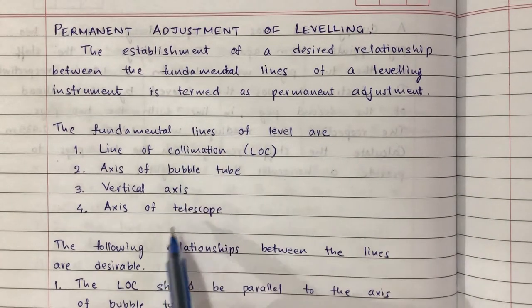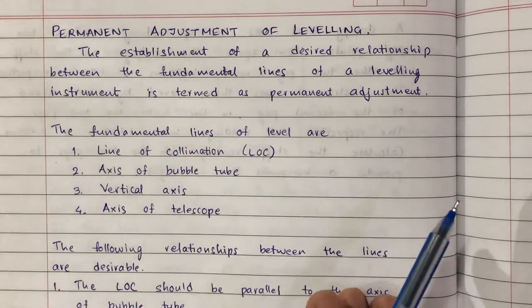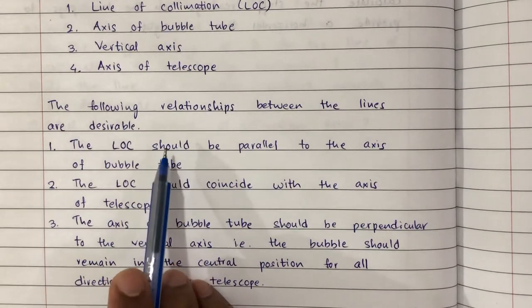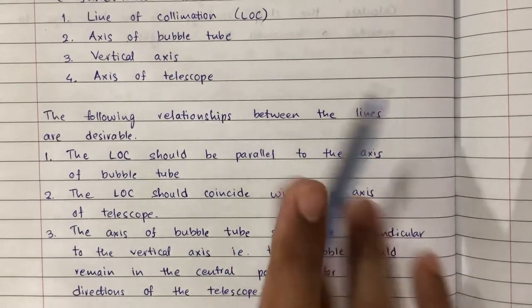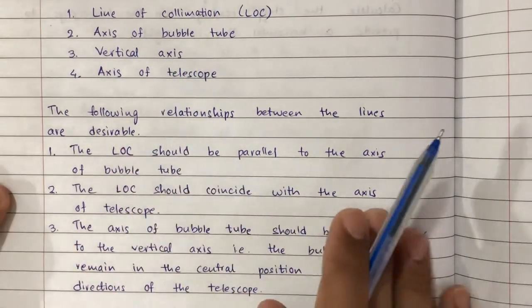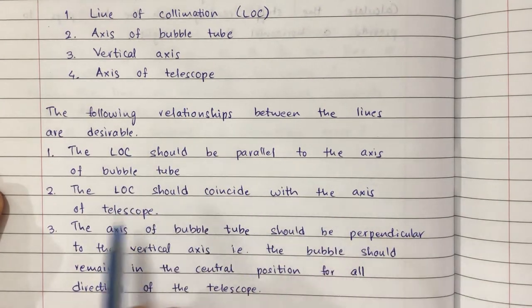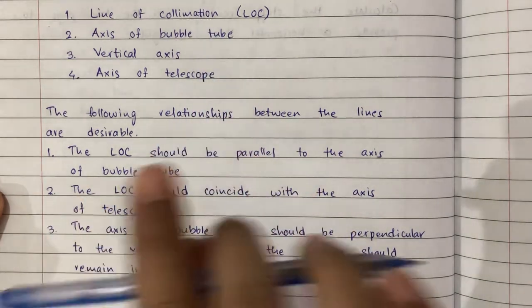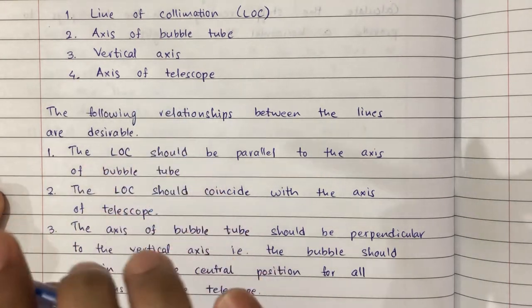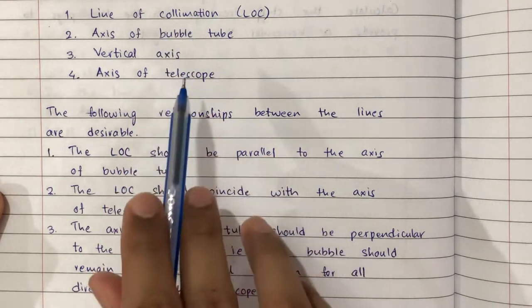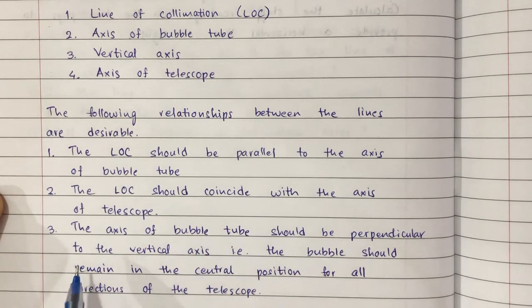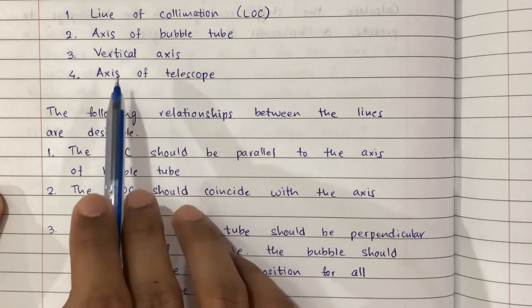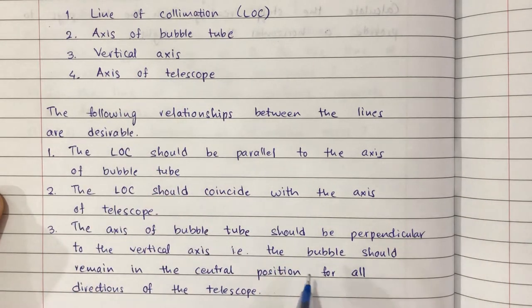Some desired relationships have to be established in order to have the permanent adjustment of leveling. The first relationship is that the line of collimation should be parallel to the axis of bubble tube. Second, the line of collimation should coincide with the axis of telescope — both should coincide. Third, the axis of bubble tube should be perpendicular to the vertical axis, meaning the bubble should remain in the central position for all directions of the telescope.